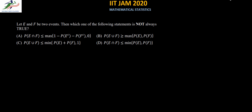Hello and welcome to Sourav Sir's Classes. Today we are discussing the IIT JAM 2020 Mathematical Statistics paper. In this question, we are told that there are two events E and F and we are asked to find which of the following statements is not always true. 'Not always true' means it will be true in some cases but not in all cases, so we have to start with some assumptions.